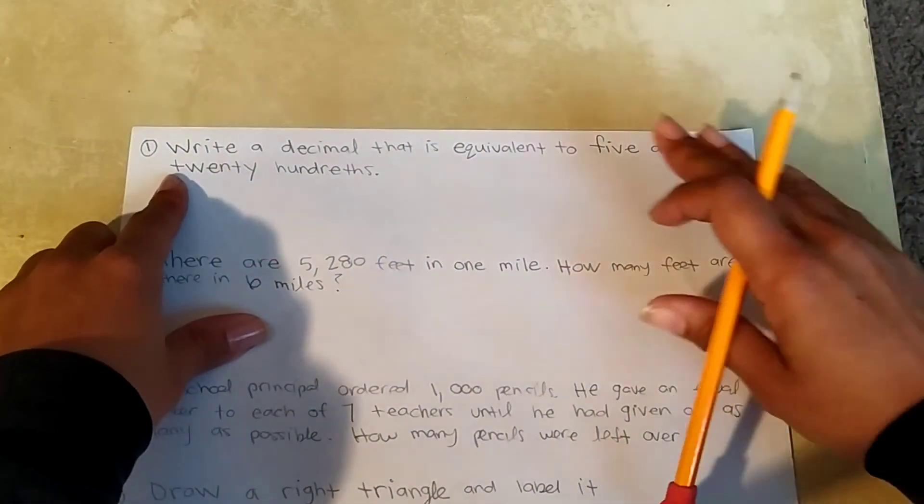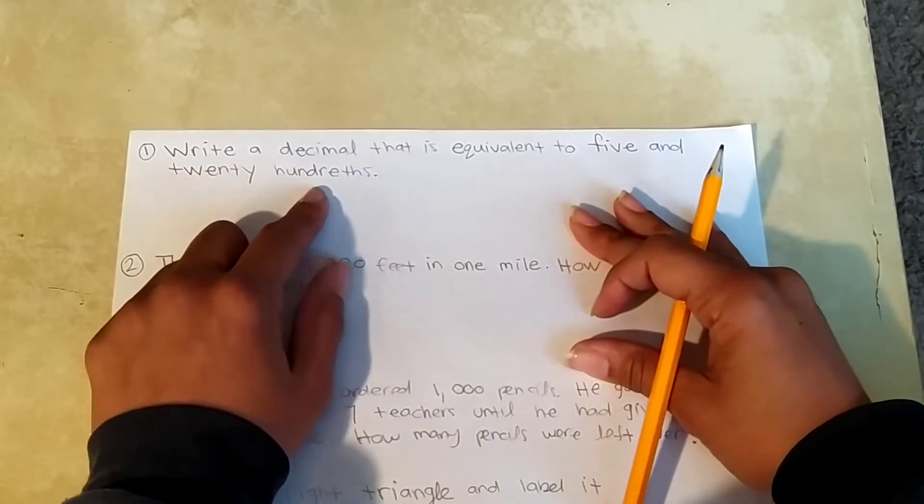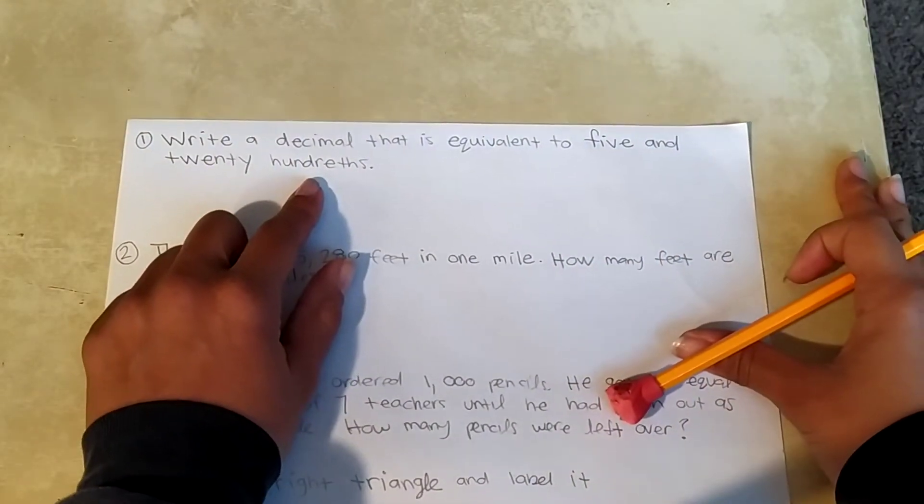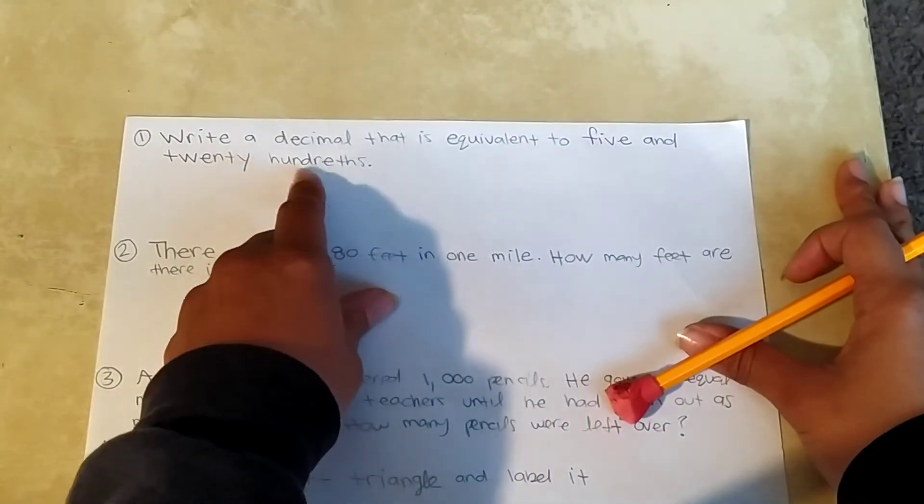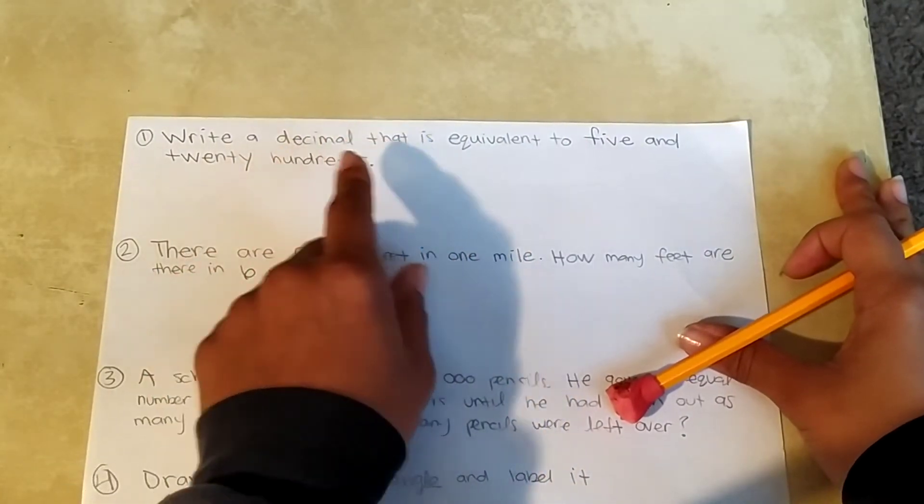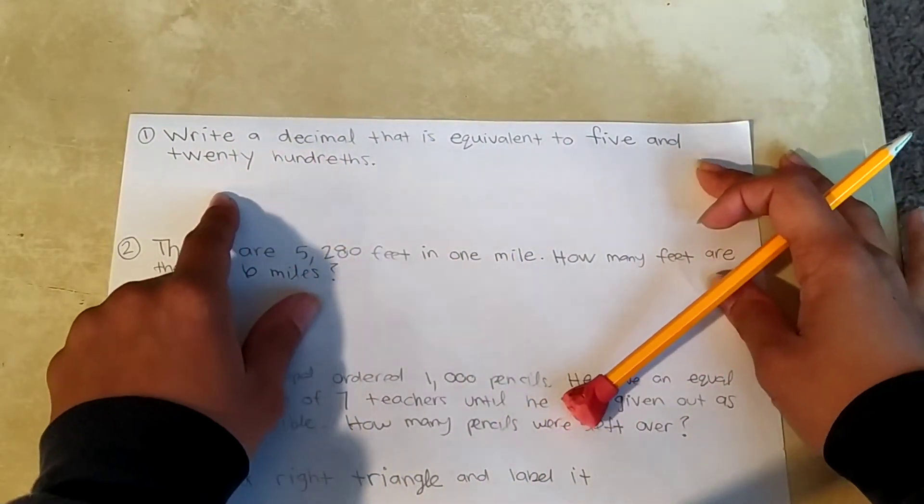Number one, write a decimal that is equivalent to 5 and 20 hundredths. So before we write the decimal, we want to see what this looks like in fraction form.